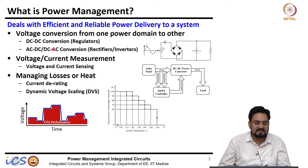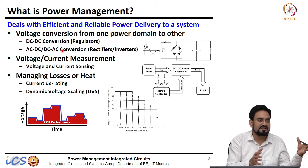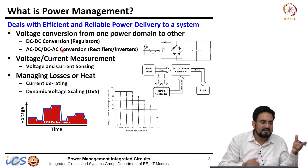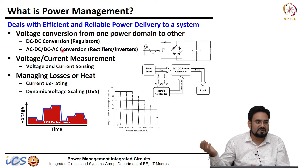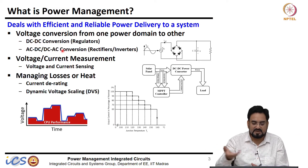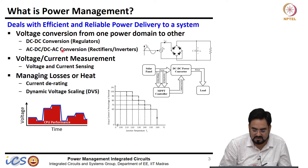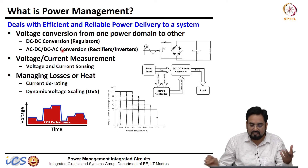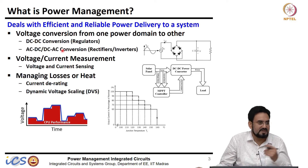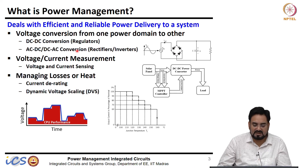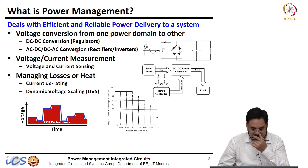For DC-to-AC conversion, if you have a DC source such as a battery and want to convert it to AC, the example is your inverter which we use in our homes. That is a DC-to-AC converter, which we call inverters.